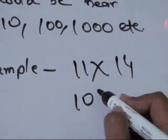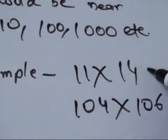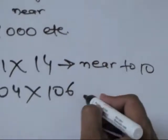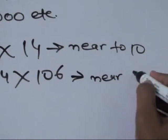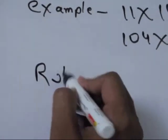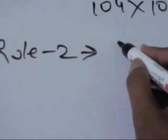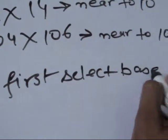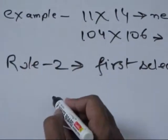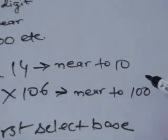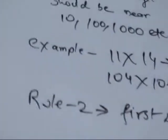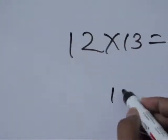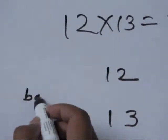You can see these two numbers are near to ten. So eleven into fourteen is near to ten. Numbers like 104 and 106 are near to hundred. So rule two is: first select the base. Select base means identify the nearest ten, hundred, or thousand. So let us try this: twelve into thirteen. The nearest base is ten.